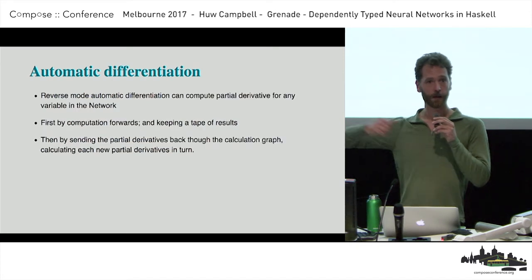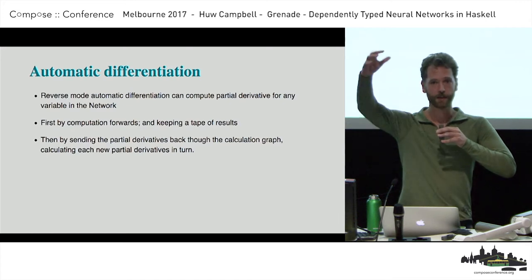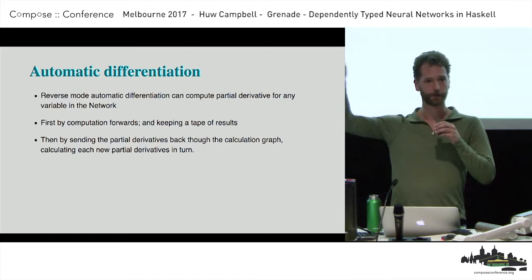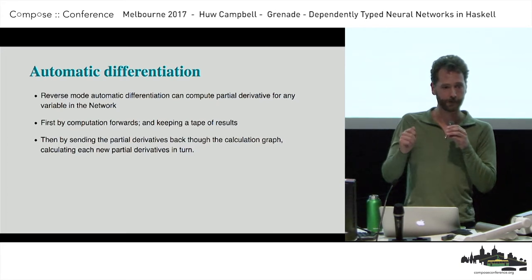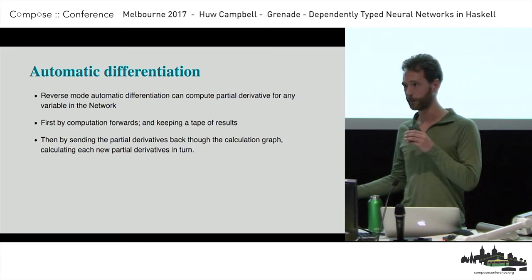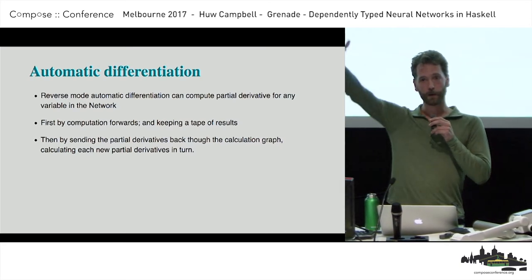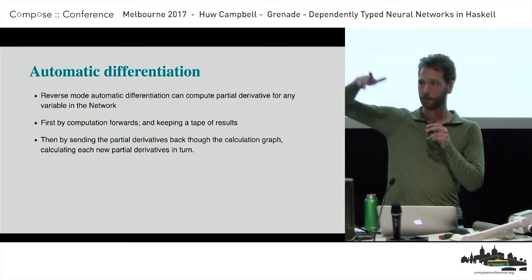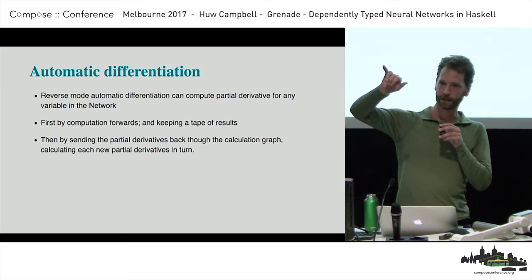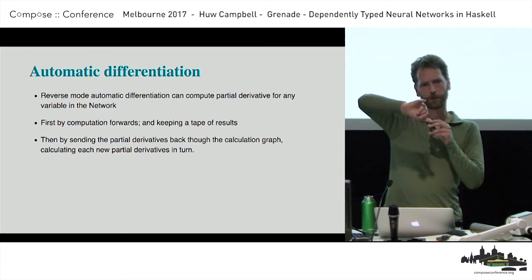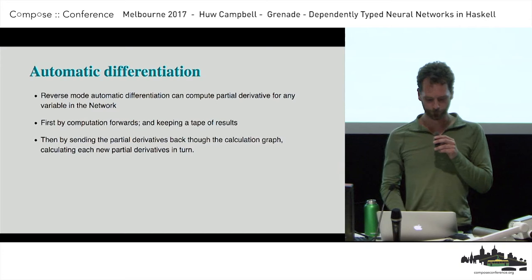Then there's reverse mode, which says my operation is a graph. As I go through it forwards, I'm going to remember the inputs of all the points on this graph — this is called the Wengert tape, remember that term, I'll use it a little bit later. We go forwards through it and remember all of these things, and then when we go back we can say: this is the gradient coming out — how would the output have changed if I changed the input a little bit?